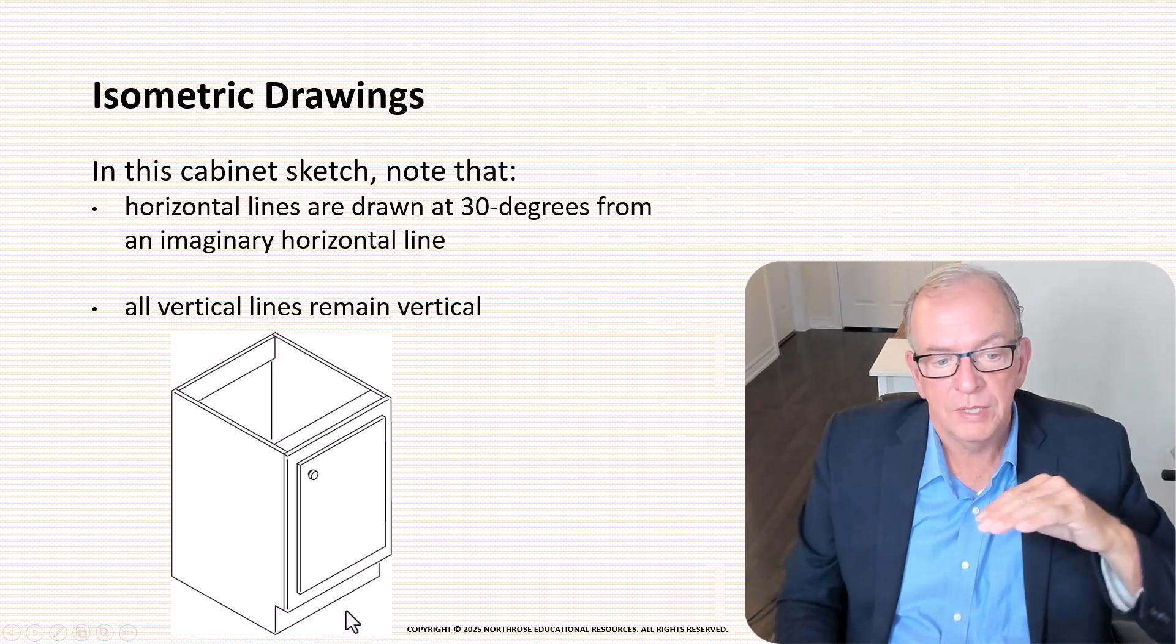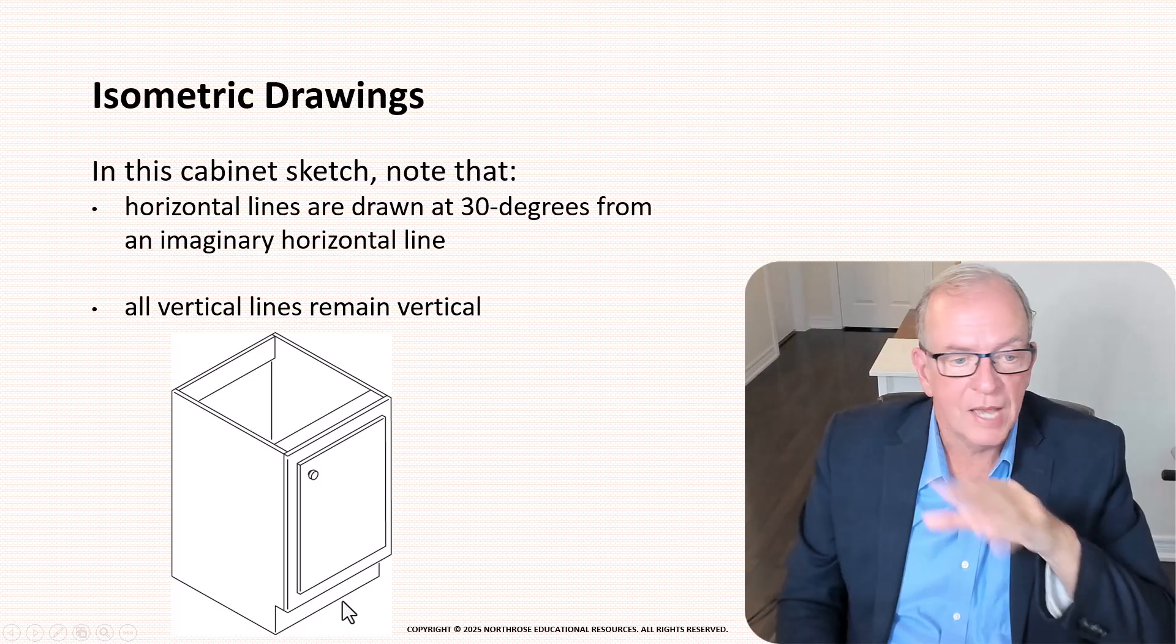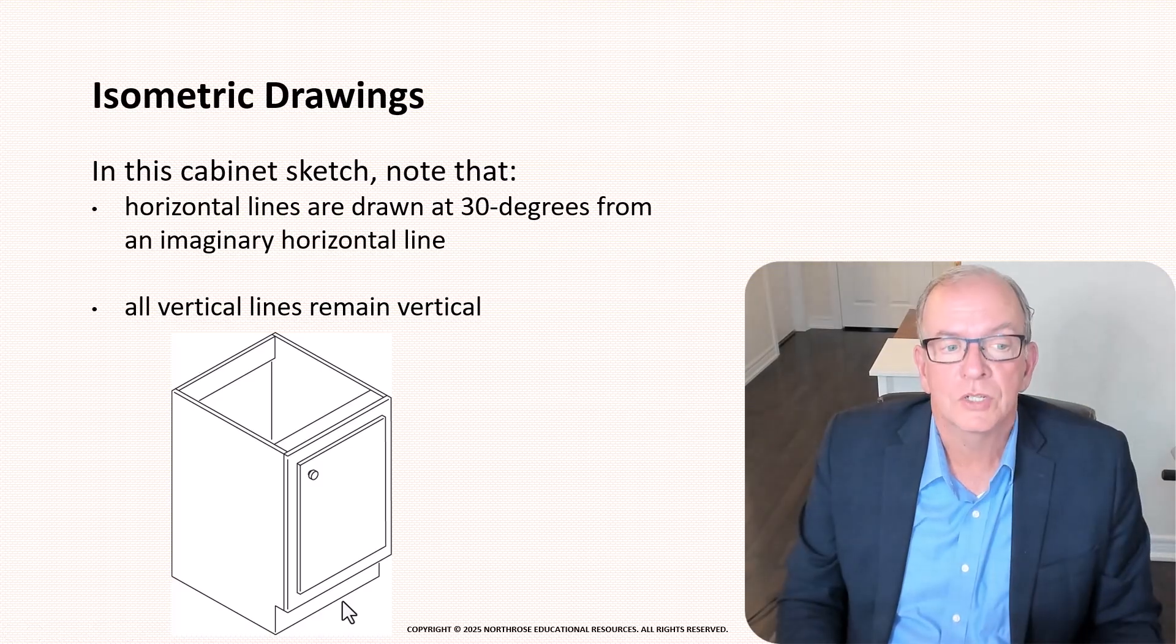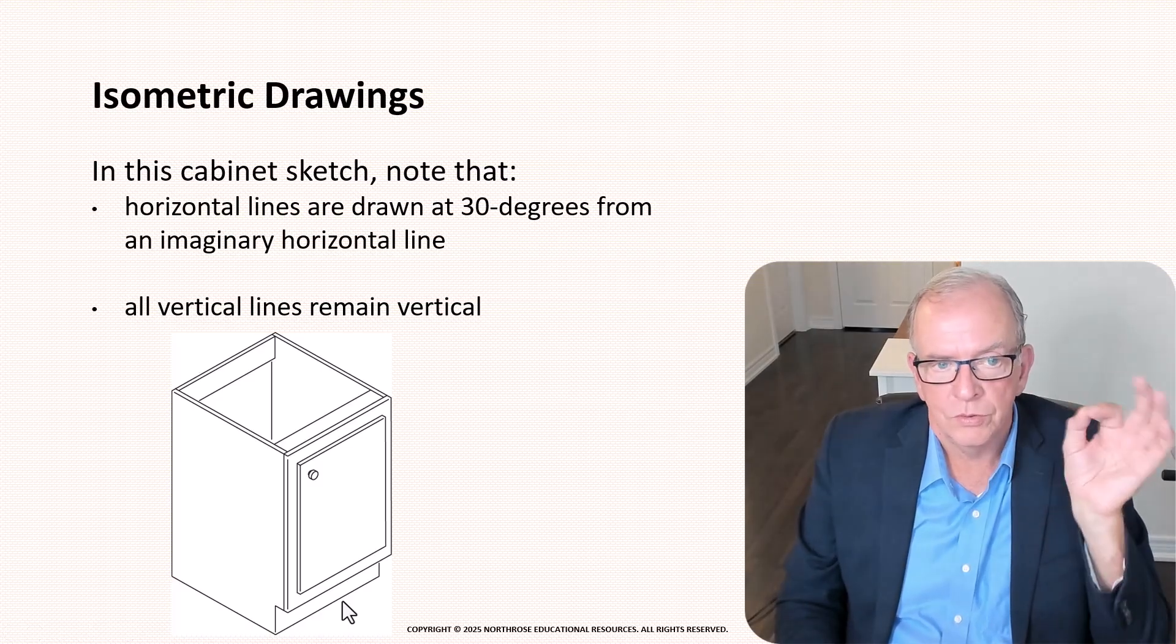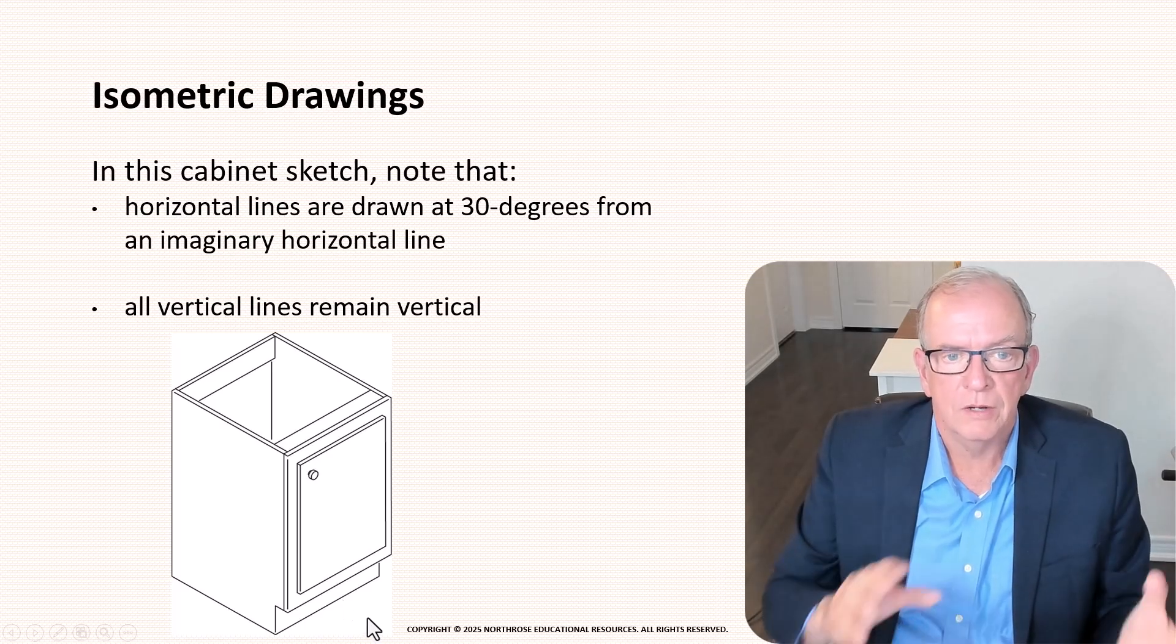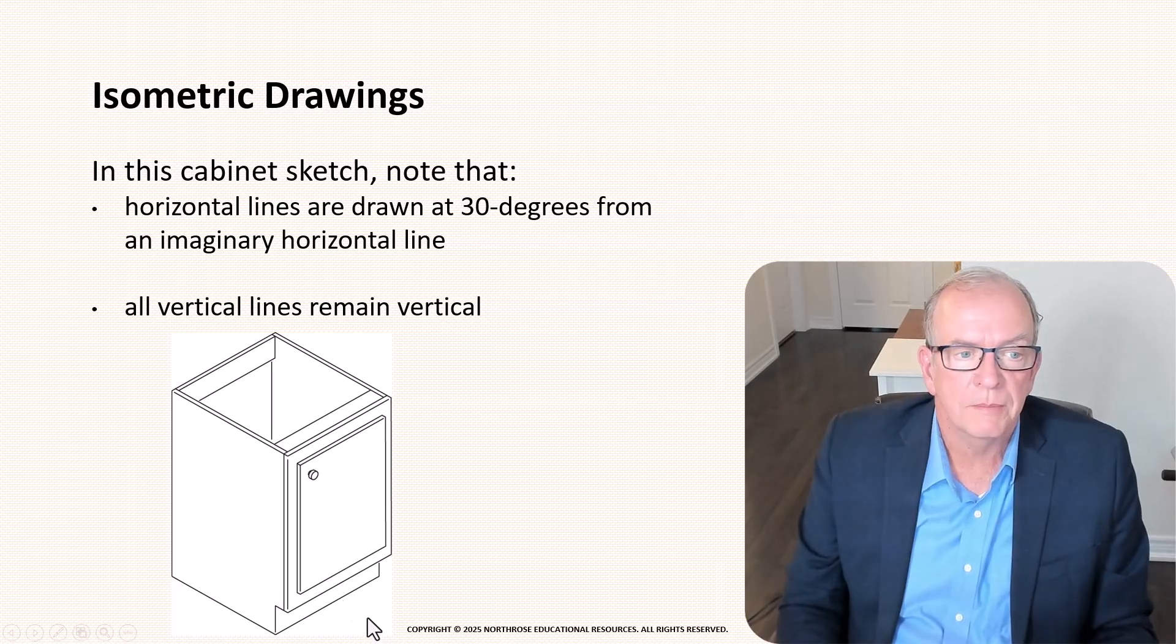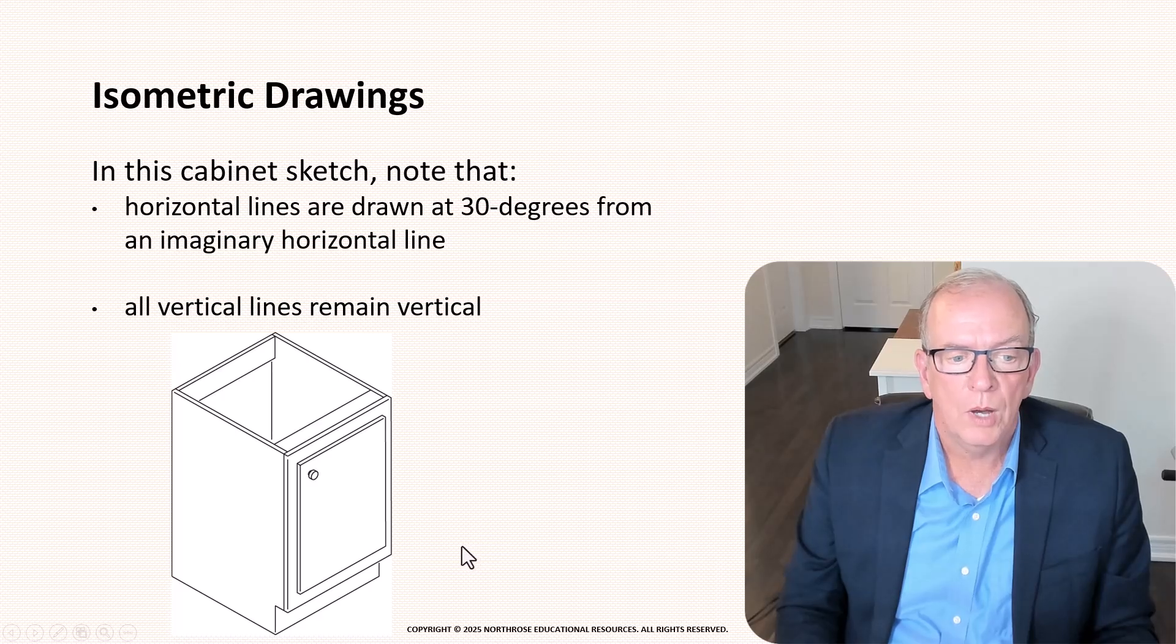When I sketch something even if it's a rough sketch it's not exact isometric it's pretty much that way because that's sort of the way my mind thinks in sketching something out if I want to quickly explain something to somebody that's usually how I tend to go about doing it.